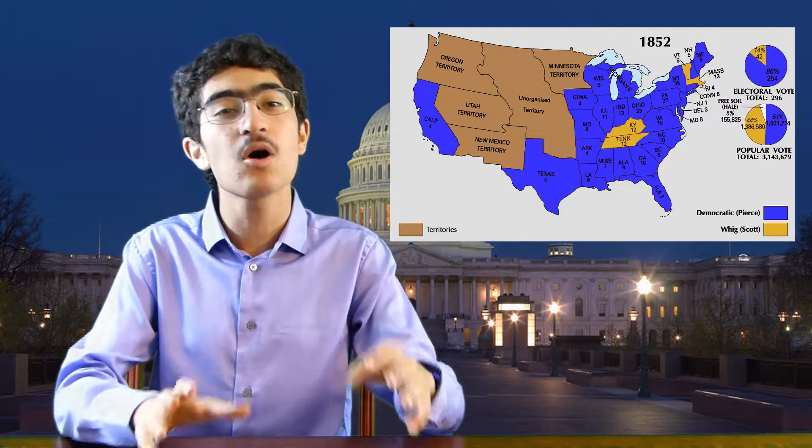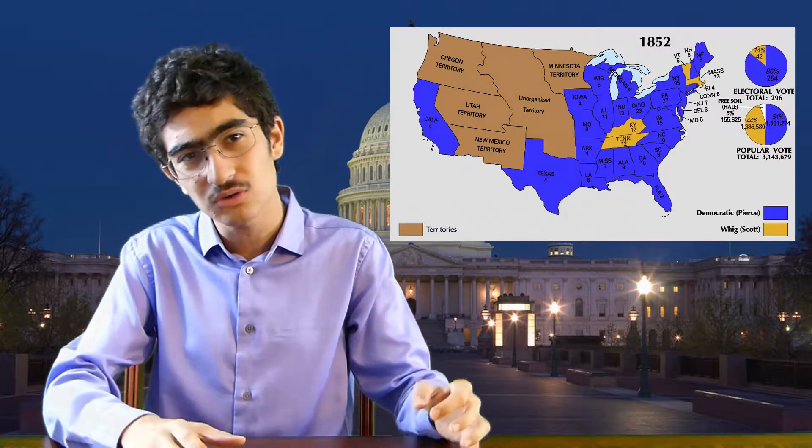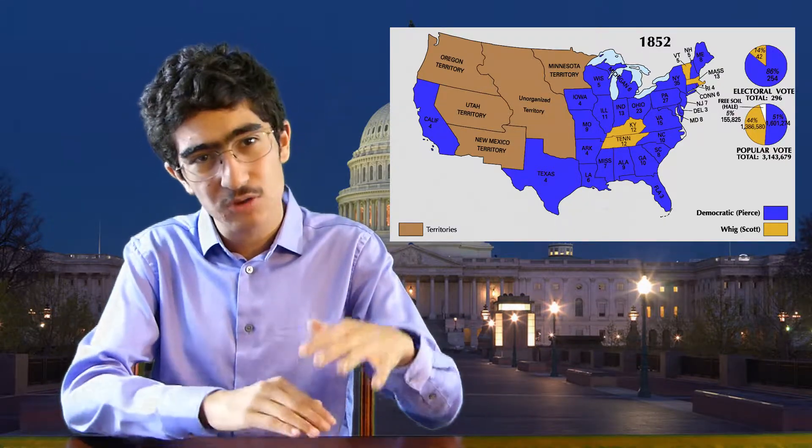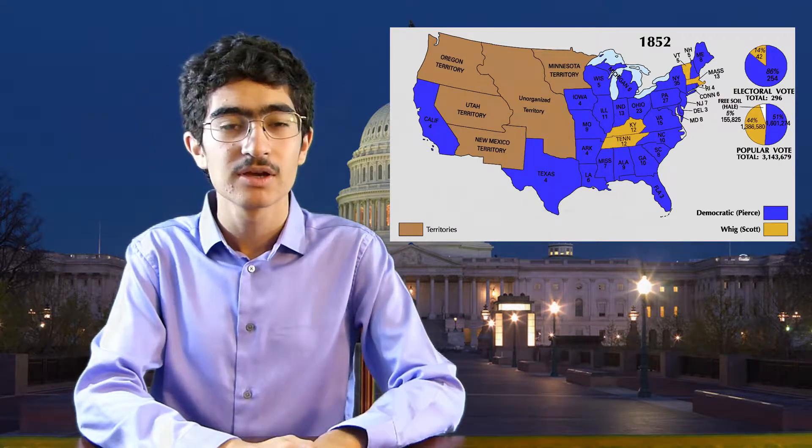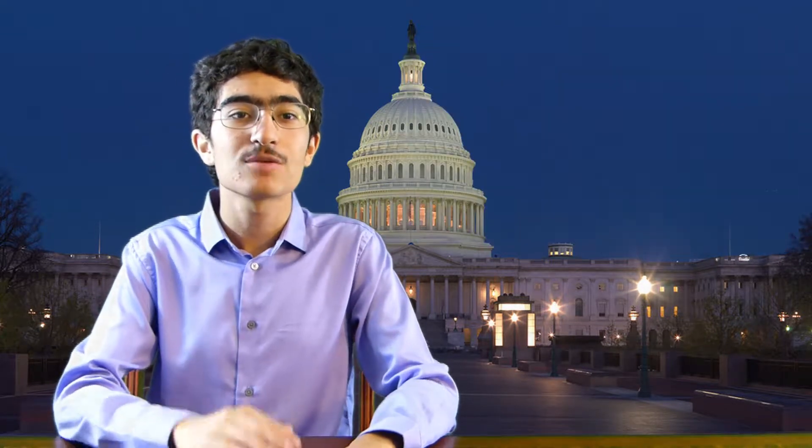We start off in 1854, as the Whig party was just falling to pieces. They only won four states out of 31 in the election of 1852, and controlled smaller and smaller slices of Congress as well. Some anti-slavery Whigs didn't want to go down with it. They met in Ripon, Wisconsin, and formed the Republican Party, whose main goal was to oppose the introduction of slavery into the territories, as per the Kansas-Nebraska Act.